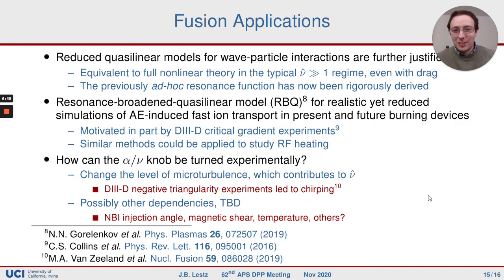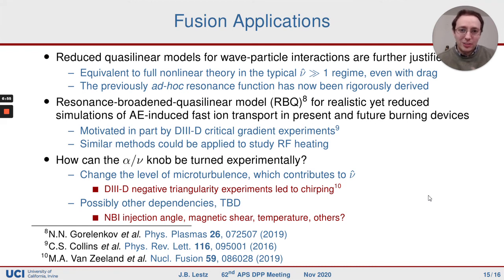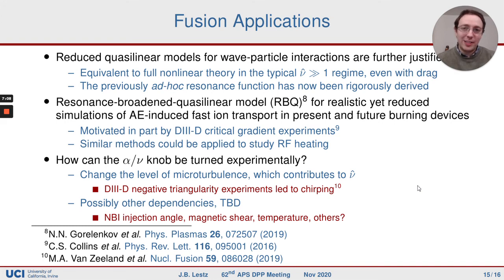The main application right now is that we've calculated the resonance function rigorously to involve drag and scattering, which is necessary for reduced quasi-linear models under development for fast ion transport. As for whether this would affect something we see in experiment, nothing jumps off the page right now — there's no huge effect you should definitely see — but it's something we want to explore further.